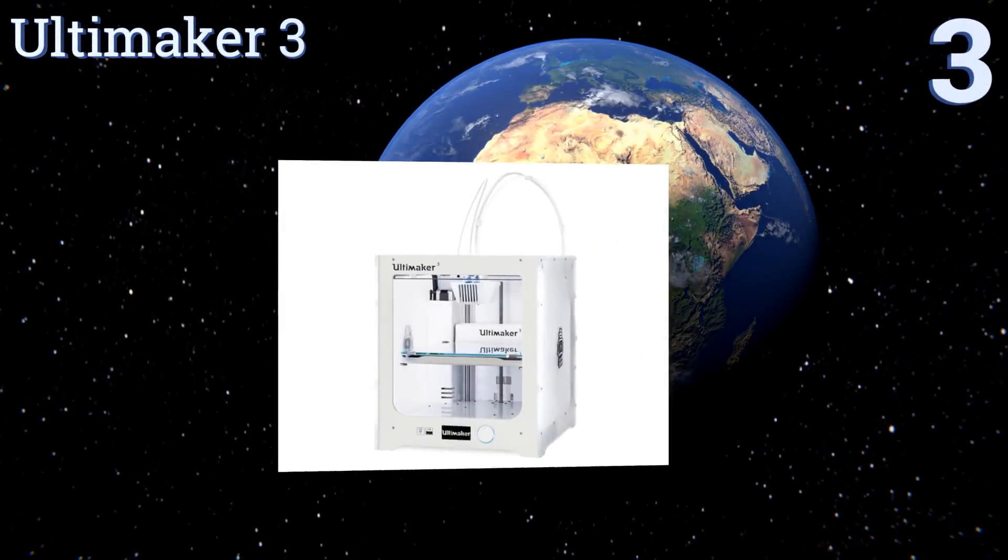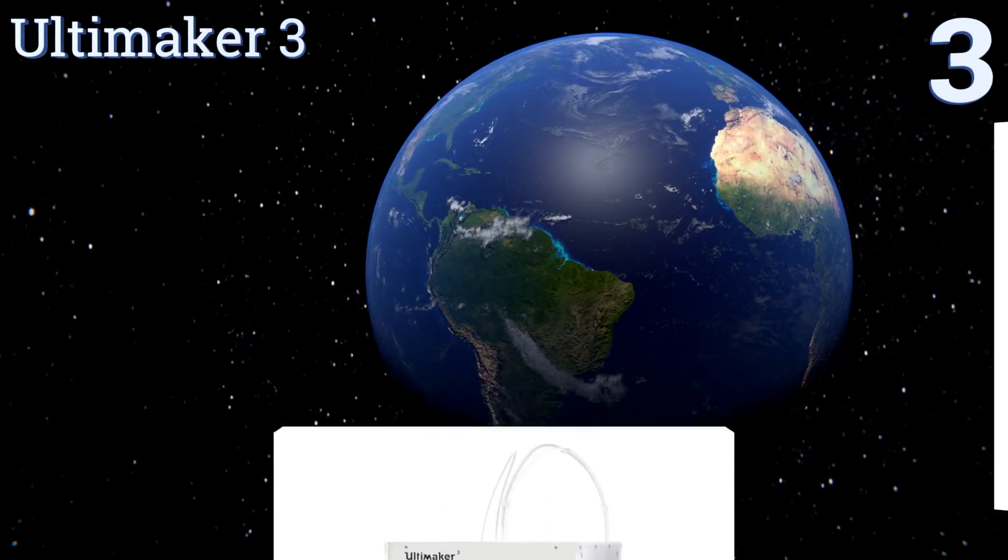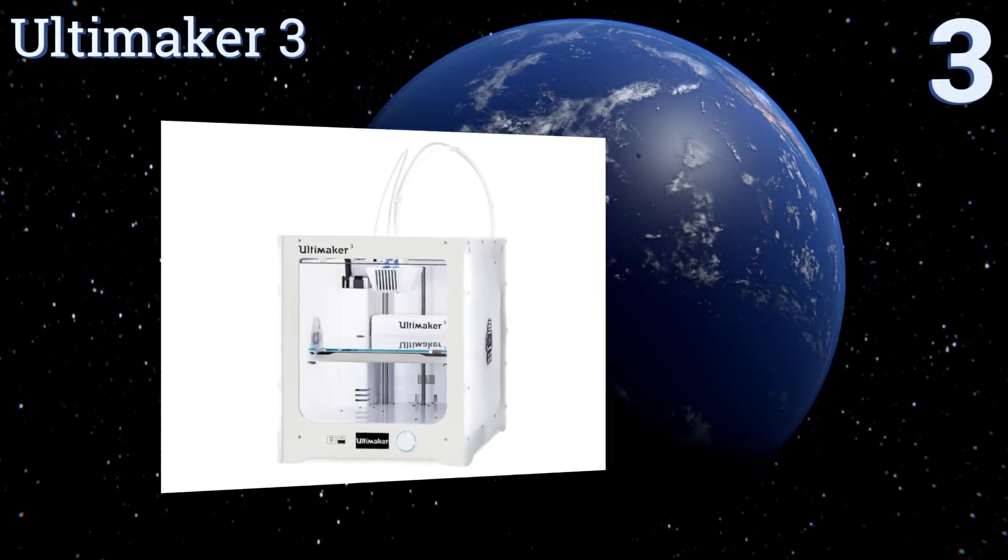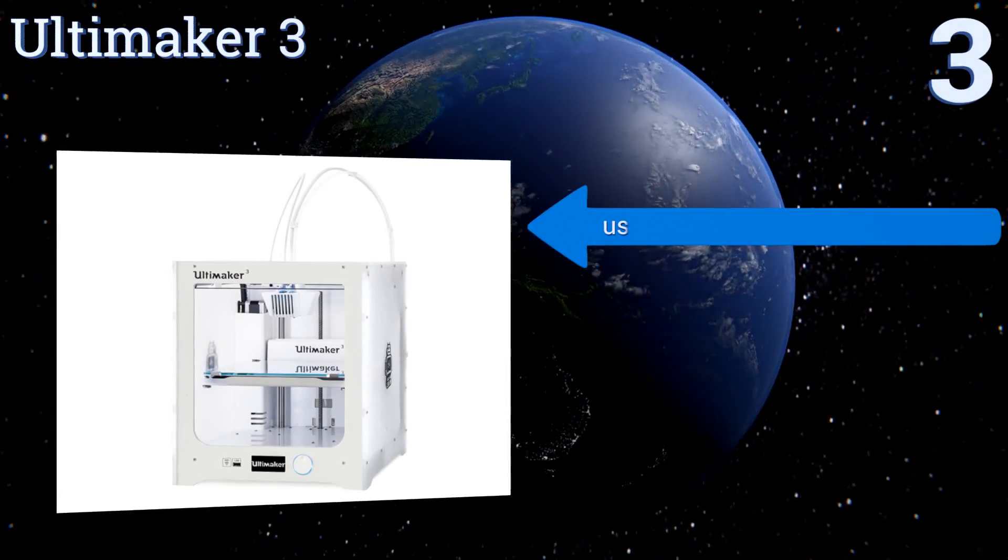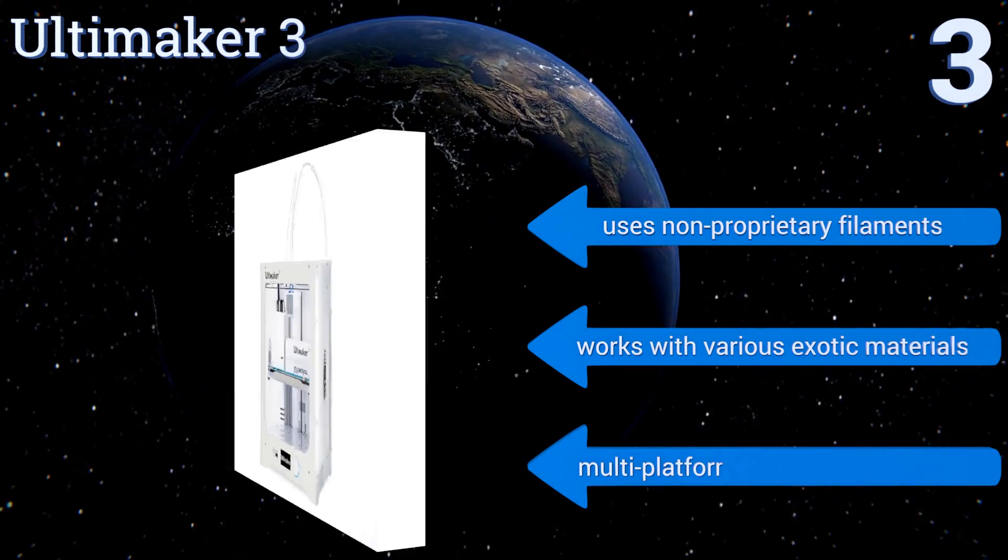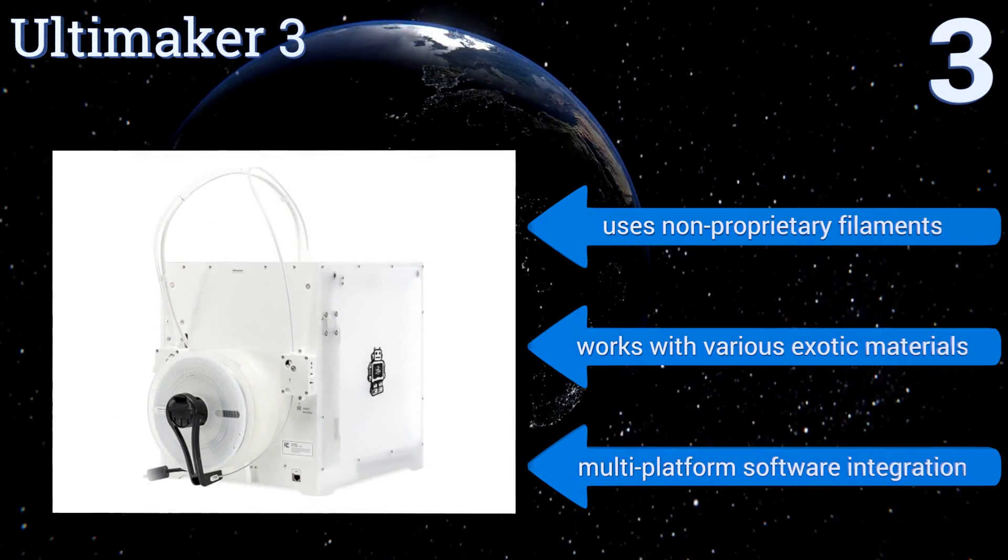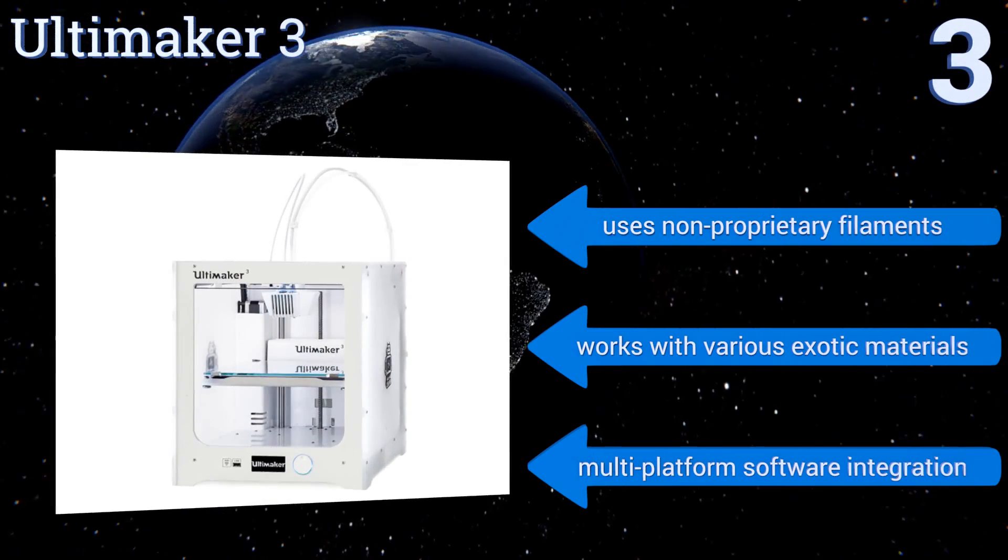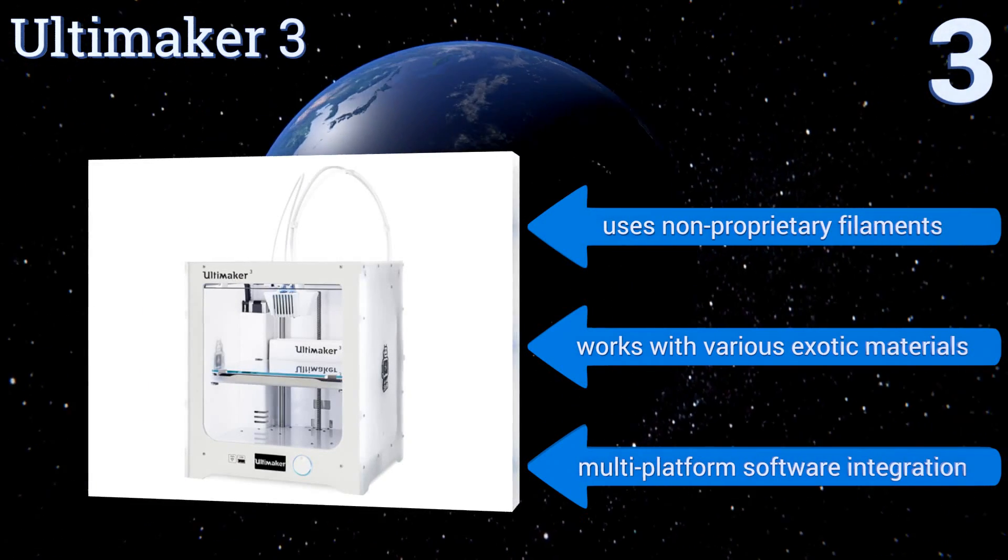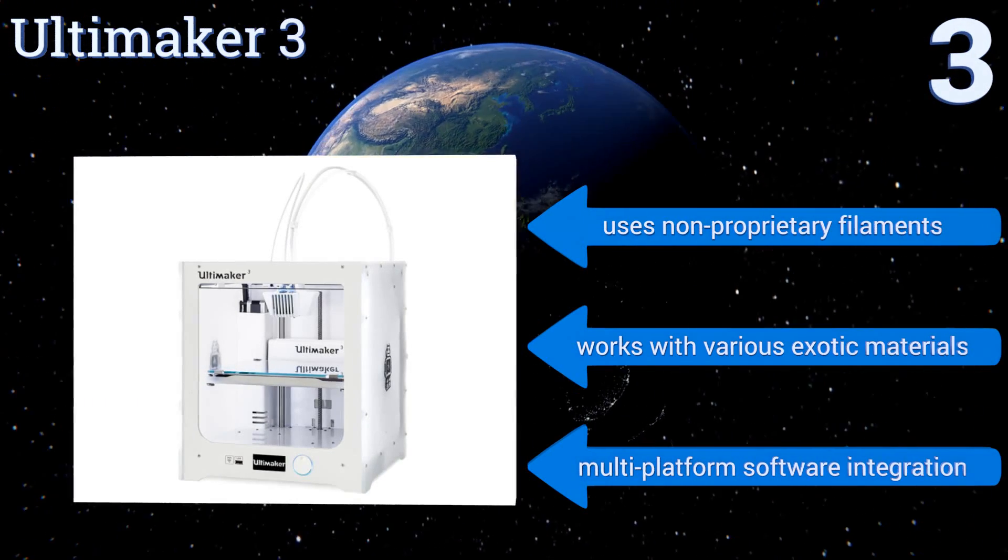Nearing the top of our list at number three, from one of the best known names in rapid prototyping comes the Ultimaker 3, an open source prosumer level device with dual extruders, automatic bed leveling, remote viewing camera, intelligent material detection and optimization, and layer resolution of up to 20 microns. It uses non-proprietary filaments and works with various exotic materials. It features multi-platform software integration.